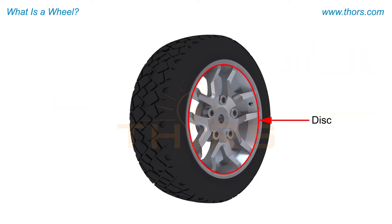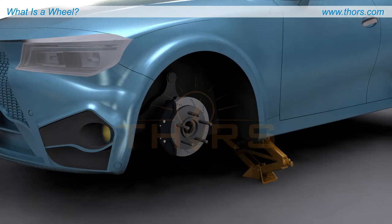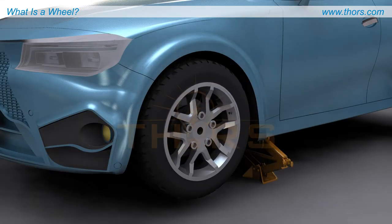A disc is a circular part of the wheel with a central hub and a spoke portion. The central hub portion of the disc comprises of a bore and a specific number of holes, which are used to mount the wheel on the vehicle with the help of fasteners.